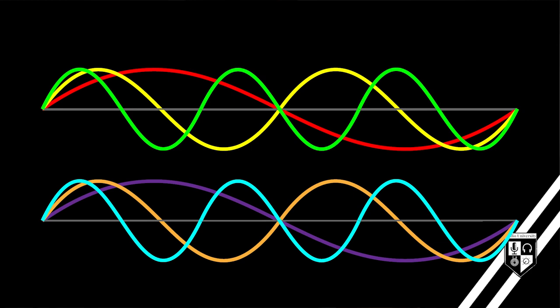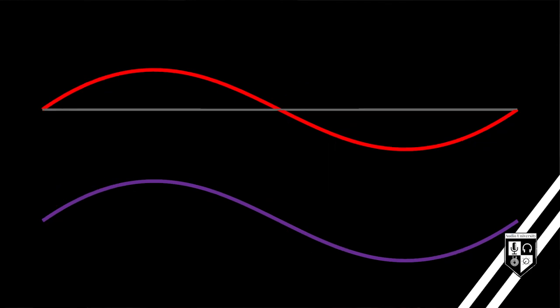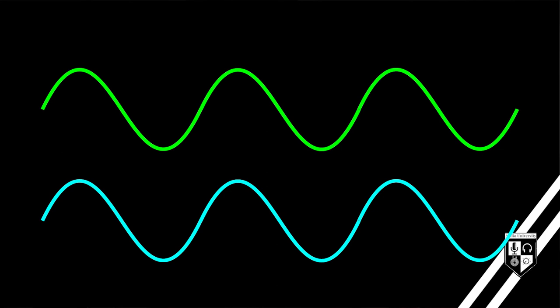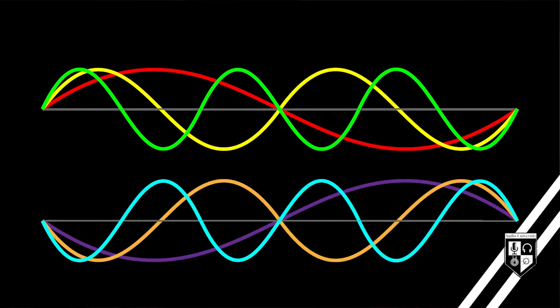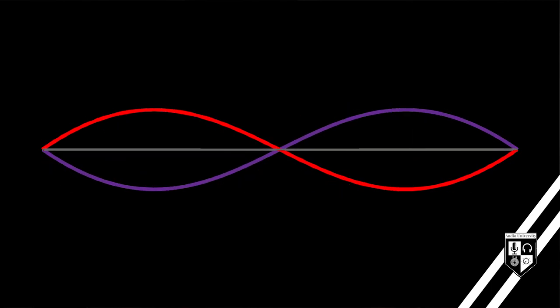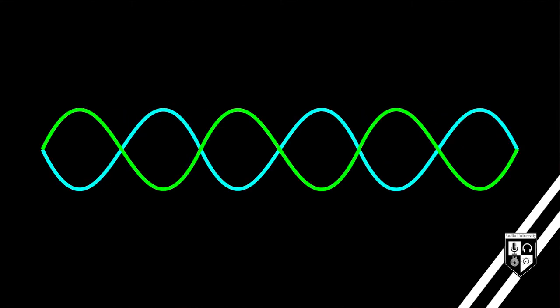In this example, we have two identical signals, each containing the same three frequencies. Inverting the polarity of one of these signals will cause a complete cancellation when they mix together at the destination. Inverting the polarity of a signal affects all frequencies in that signal evenly.